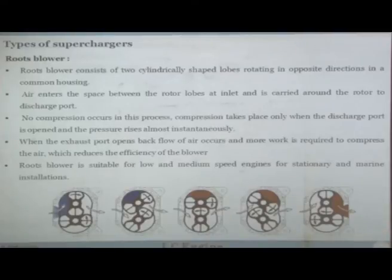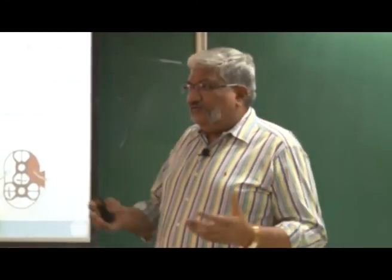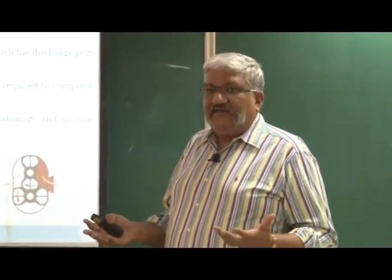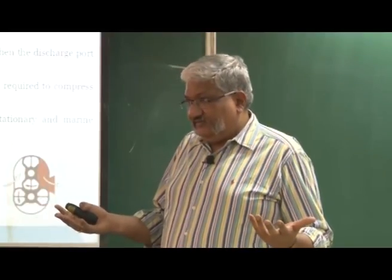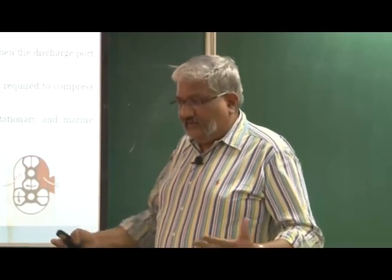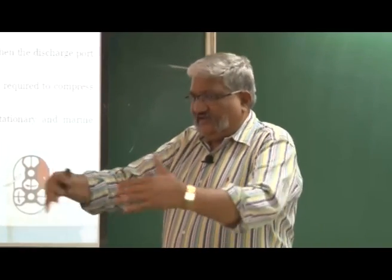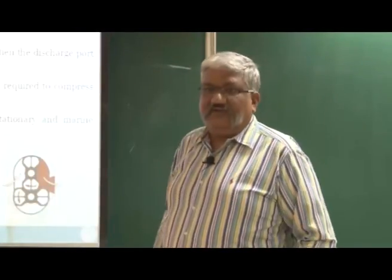For example, for a large gas tanker — a ship almost the size of a football field — the engine produces about 80 megawatts of power, rotating at 60 to 120 RPM with a 16 or 20 cylinder engine, with a 1 meter diameter piston and a 4 meter stroke. These are the kinds of large stationary and marine applications suited to roots blowers.